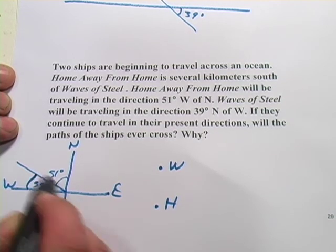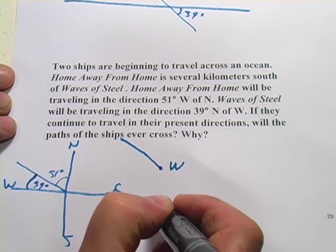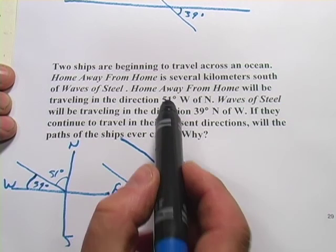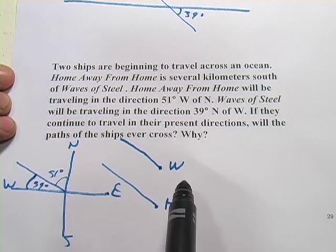Because 39 degrees west of north would put it exactly at the same angle. So these two ships are both traveling at the same angle. So saying 51 degrees west of north is the same thing as saying 39 degrees north of west.